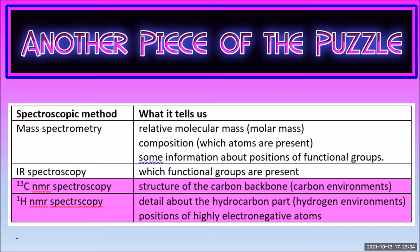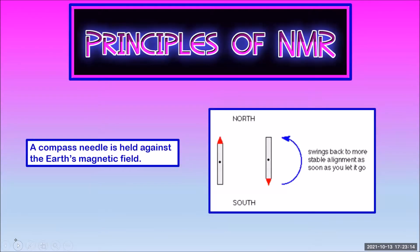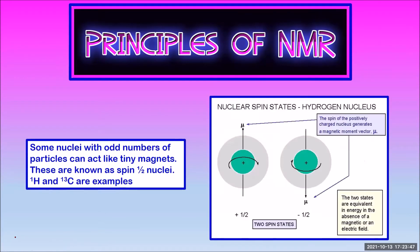Learning to interpret NMR spectra will give us information about the structure of the hydrocarbon part of a molecule. Let's start by talking about what magnetic resonance is. If you held a compass needle and forced the north arrow to point south, then as soon as you let go the needle would swing back. That's because it's a much more stable, or lower energy state, for the compass needle to align with the magnetic field. Changing between those two positions is called resonance. Some nuclei with odd numbers of particles, like hydrogen-1 and carbon-13, are known as half-spin nuclei, and these nuclei can act like tiny magnets.